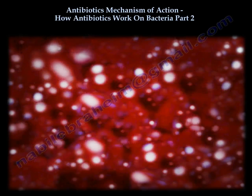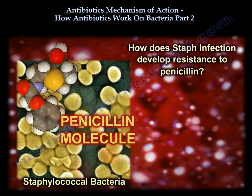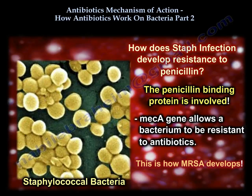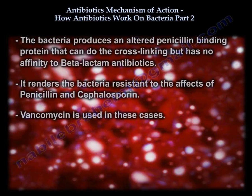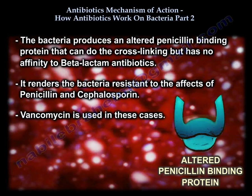How does Staph develop resistance to penicillin? The gene involved is the penicillin-binding protein 2a, the mecA gene. This is how MRSA develops: the bacteria produces an altered penicillin-binding protein that can still do cross-linking but has no affinity to beta-lactam antibiotics. This renders the bacteria resistant to penicillin and cephalosporin, so vancomycin is used in these cases.